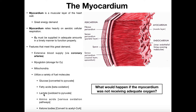It was once thought that lactate was a metabolic dead end, but that has since been shown to be absolutely false. The lactate, after it's produced by skeletal muscles, can move into the blood. The myocardium can then pick up that lactate and oxidize it back to pyruvate, which can then be converted to acetyl-CoA — acetyl-CoA is always our go-to.